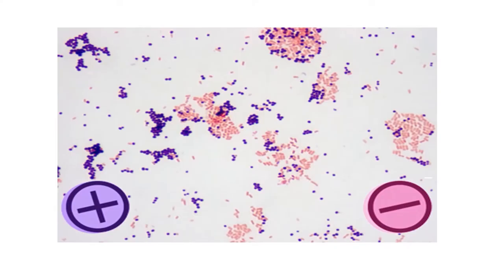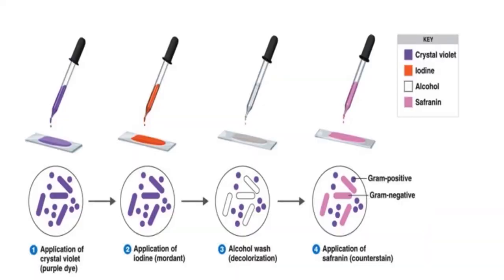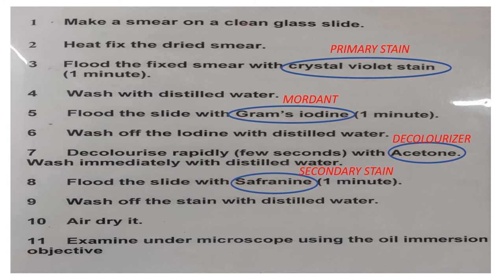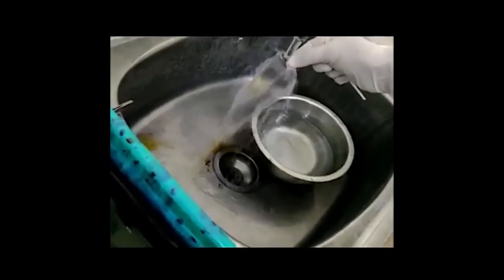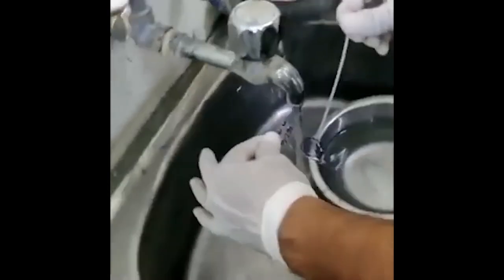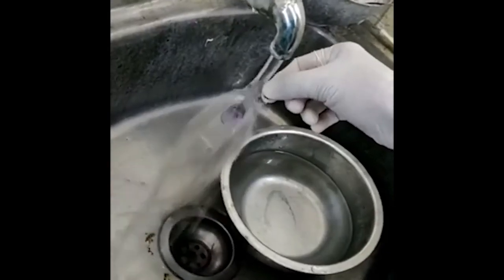The microscopic picture shows purple gram positive bacteria and pink colored gram negative bacteria. The constituents of the gram stain are: crystal violet as the primary stain, gram's iodine as the mordant, acetone as the decolorizer, and safranin as the counter or secondary stain. The first step is heat fixation of the inoculated glass slide with gentle heat. It is then flooded with crystal violet and left for a minute. After a minute, the slide is washed and flooded with gram's iodine, which is left for a minute. Iodine is washed off and rapid decolorization is done with acetone for just a few seconds, followed by immediate washing. The slide is then flooded with safranin; after one minute, safranin is washed off and the slides are air dried.